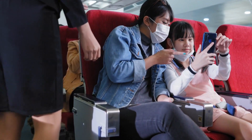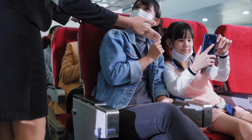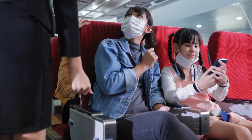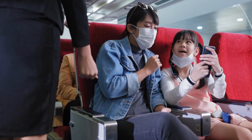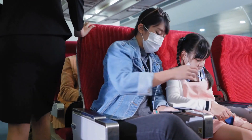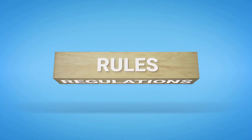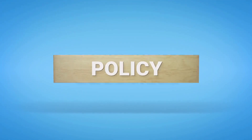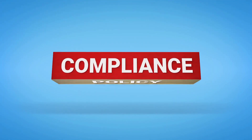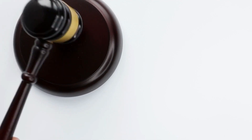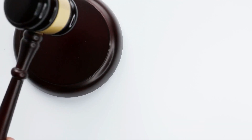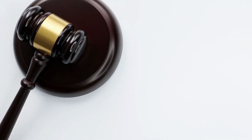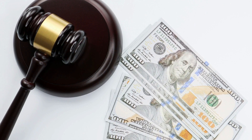In some cases, airlines may have policies in place to address passengers who refuse to switch to airplane mode or who use their devices inappropriately during flight. Flight attendants are trained to handle such situations and may take steps to ensure compliance, including warning passengers, confiscating devices, or even involving law enforcement upon landing if necessary.